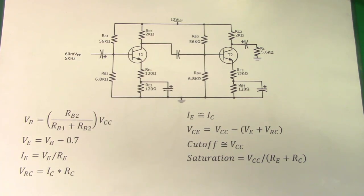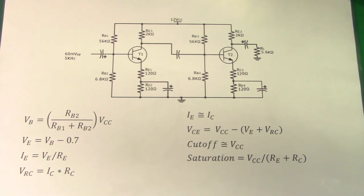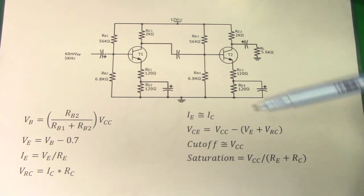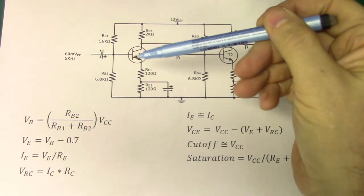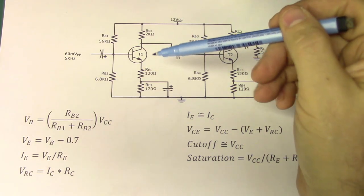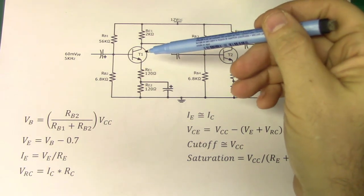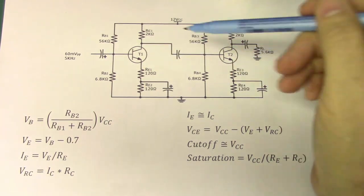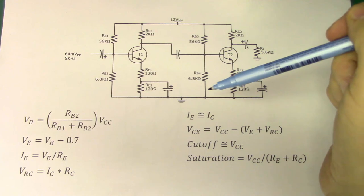Like all of the other configurations, we start out by setting or determining what the DC parameters are going to be, because that's what the AC is going to be working off of once we get a Q point. In this circuit, you're going to notice that we have two transistor stages: T1 and T2.